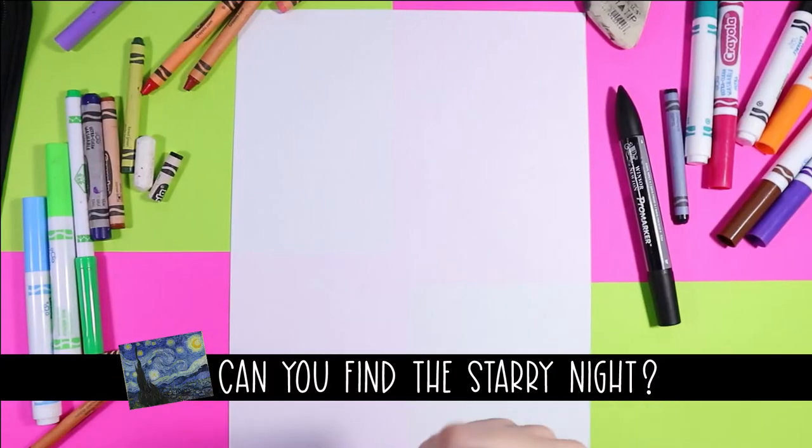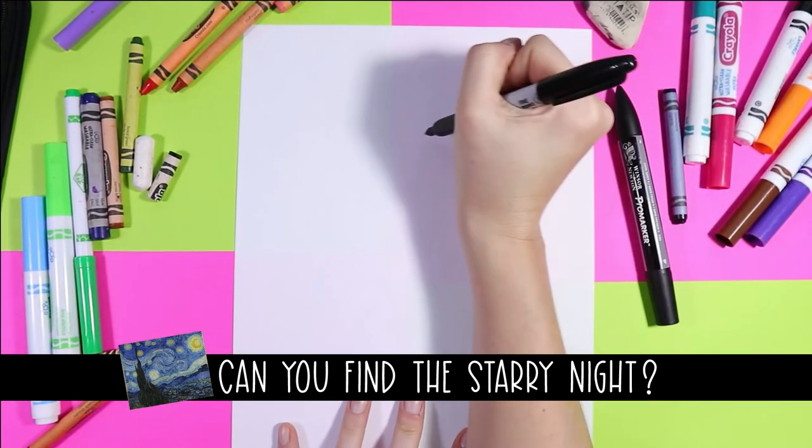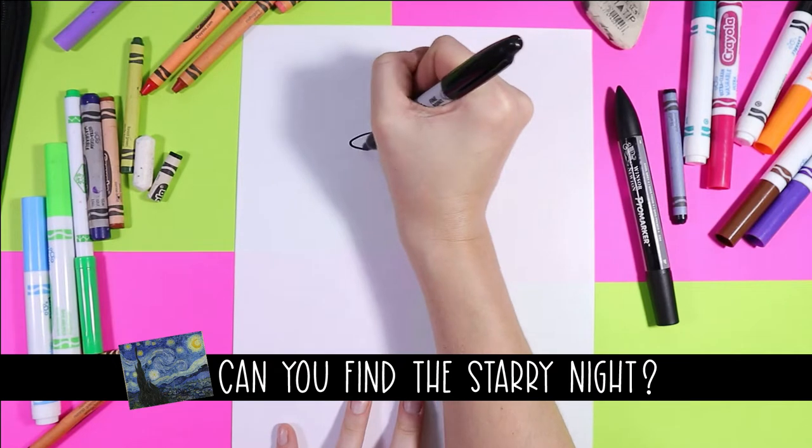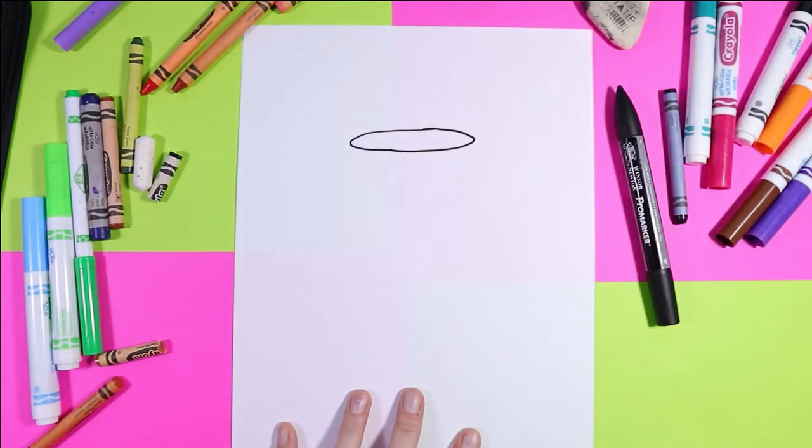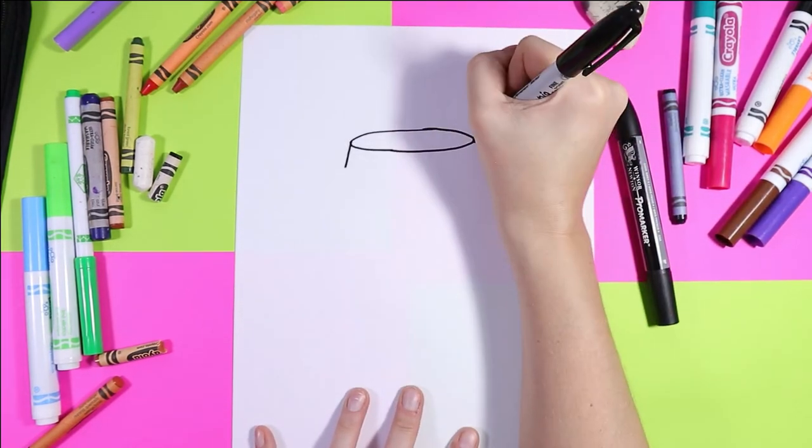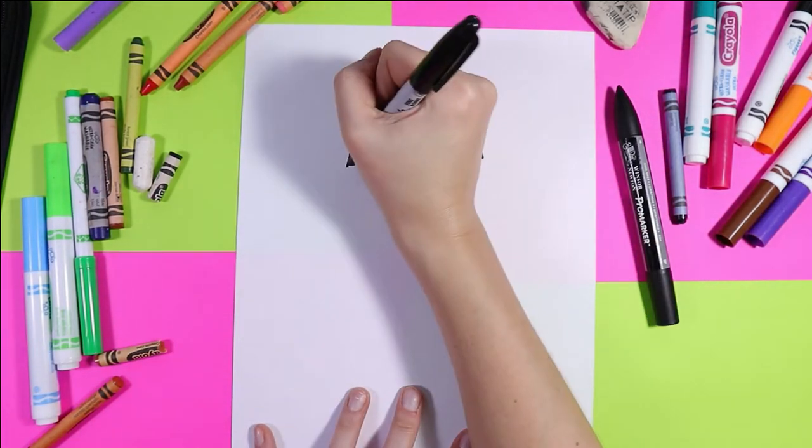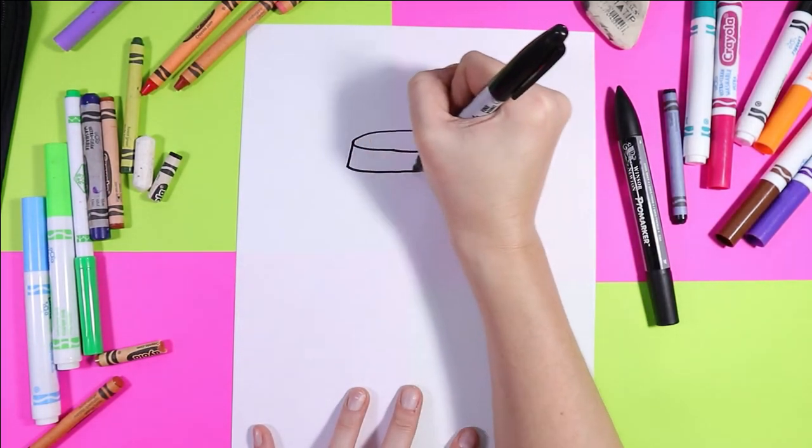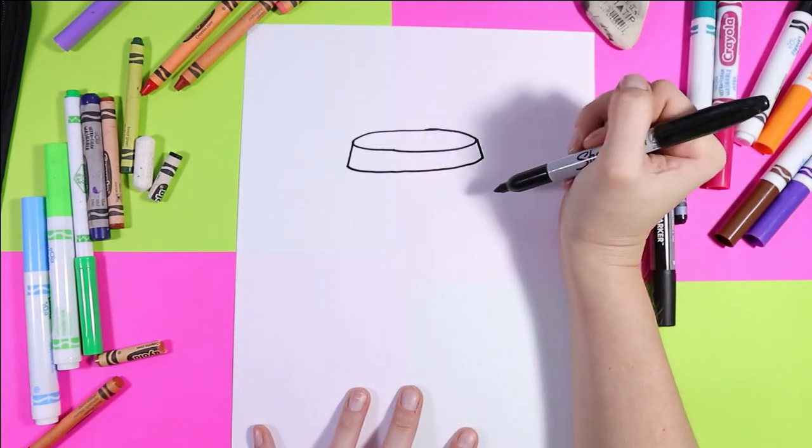Okay let's get started on our coffee cup. So we're going to begin our drawing with an oval. Towards the top of the page draw an oval, draw two lines down on a diagonal, curve it back in keeping that bottom line parallel with this. So these two need to be parallel.